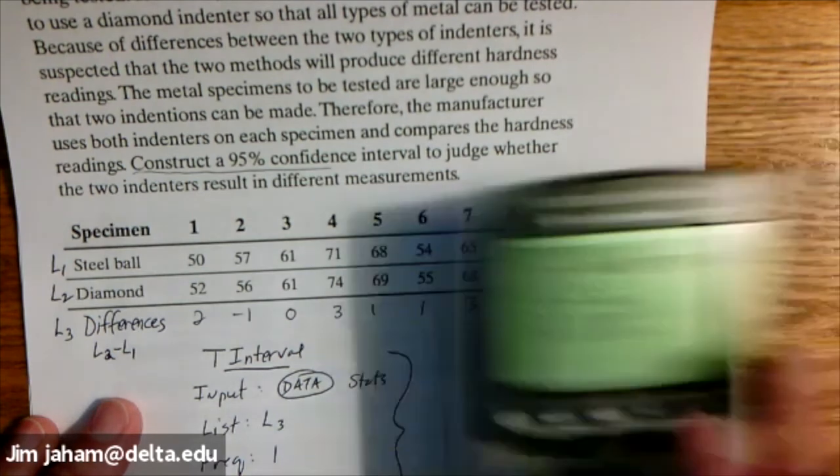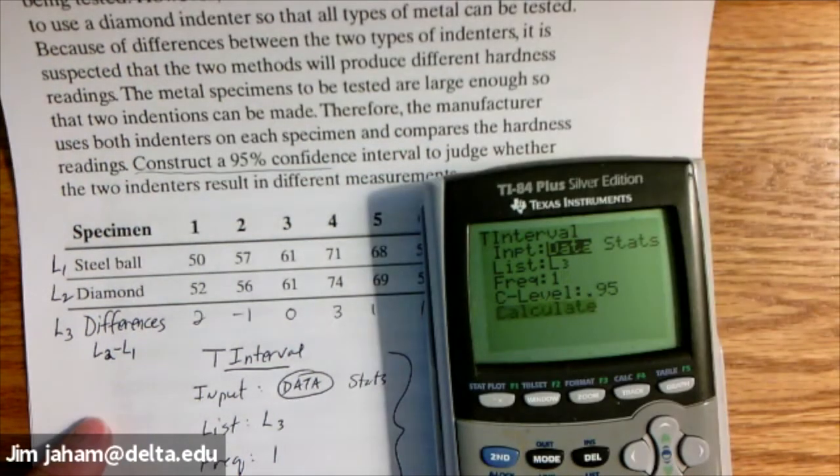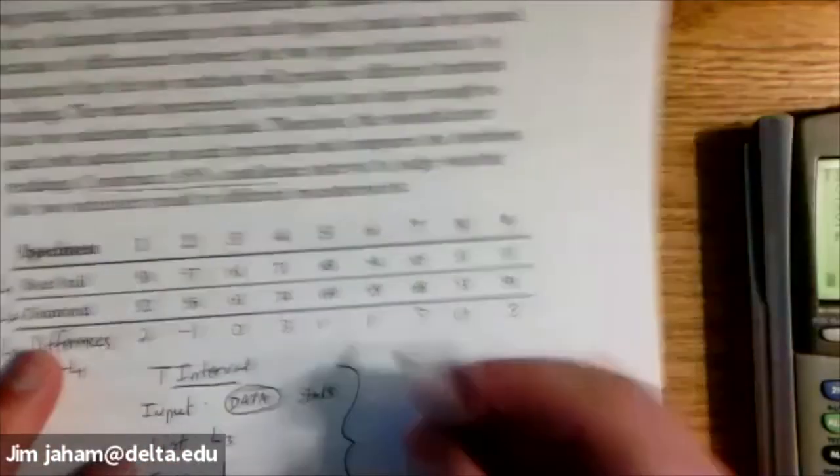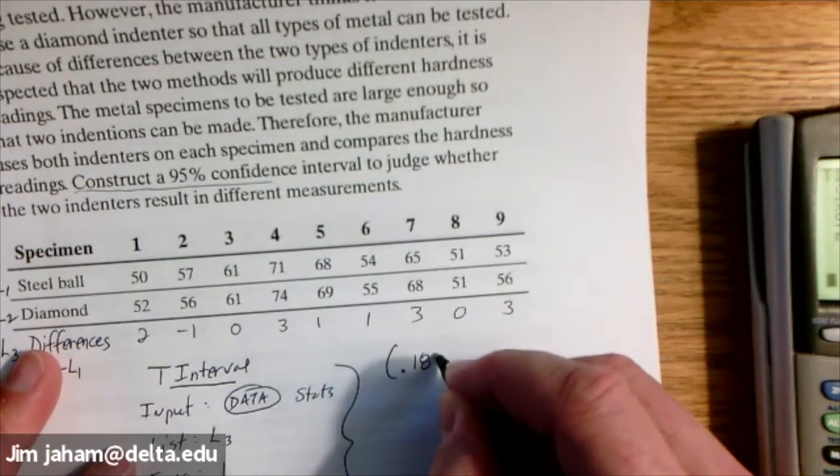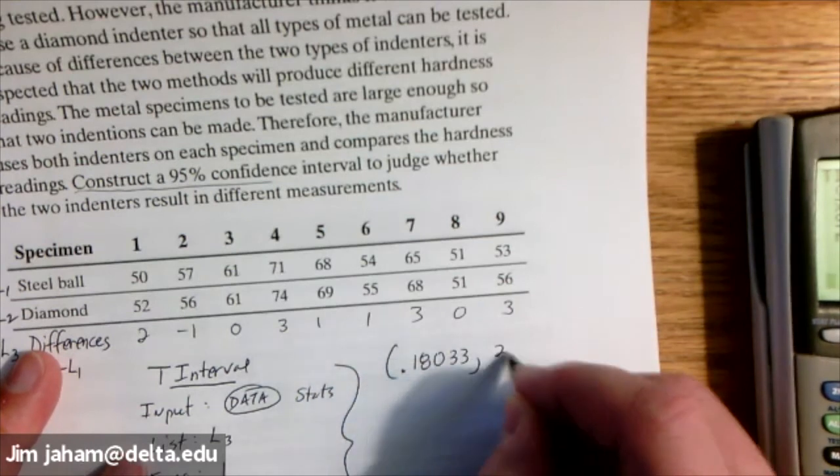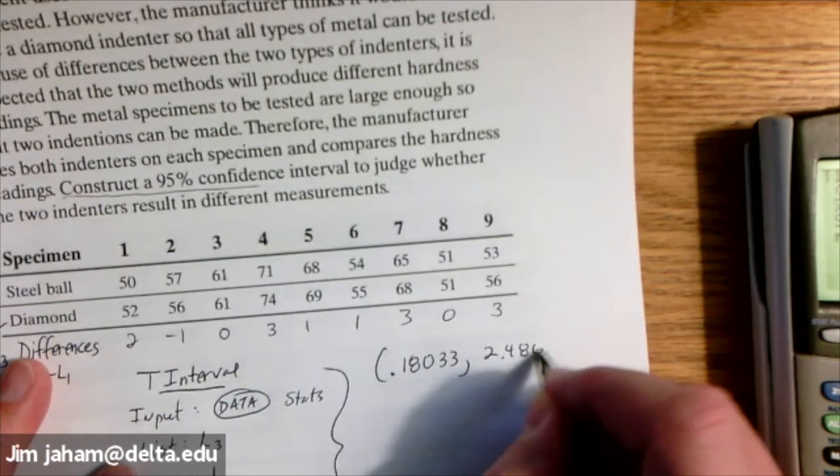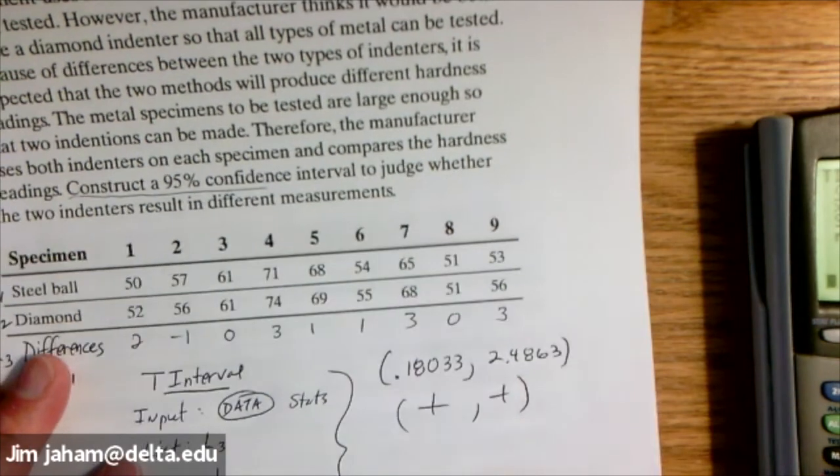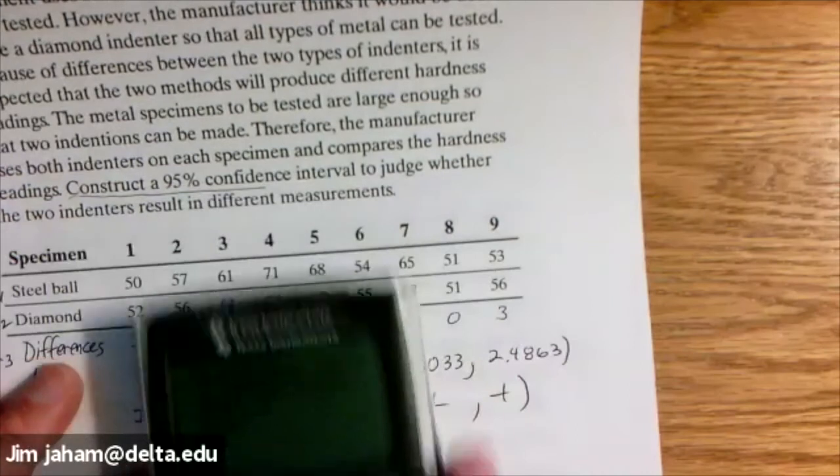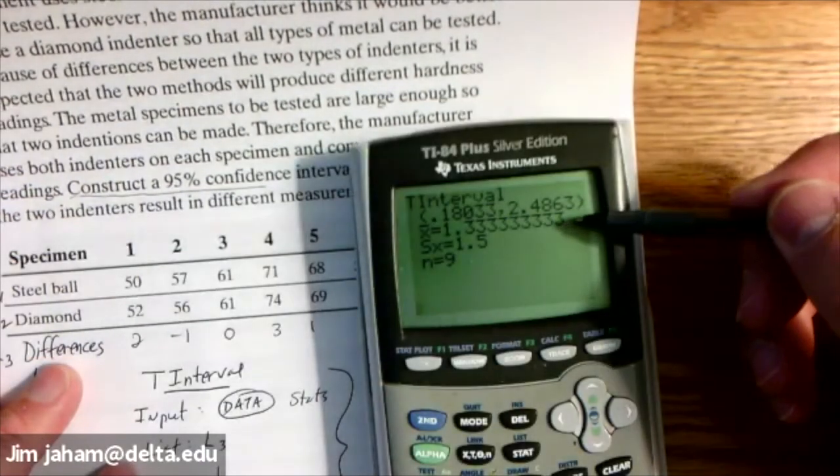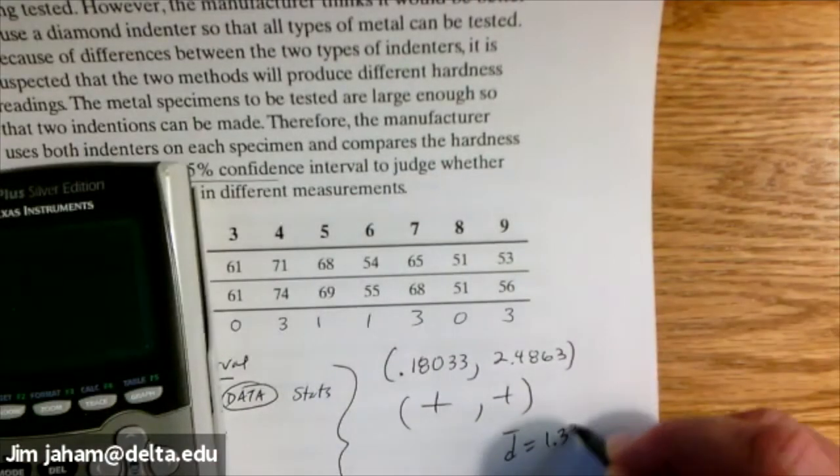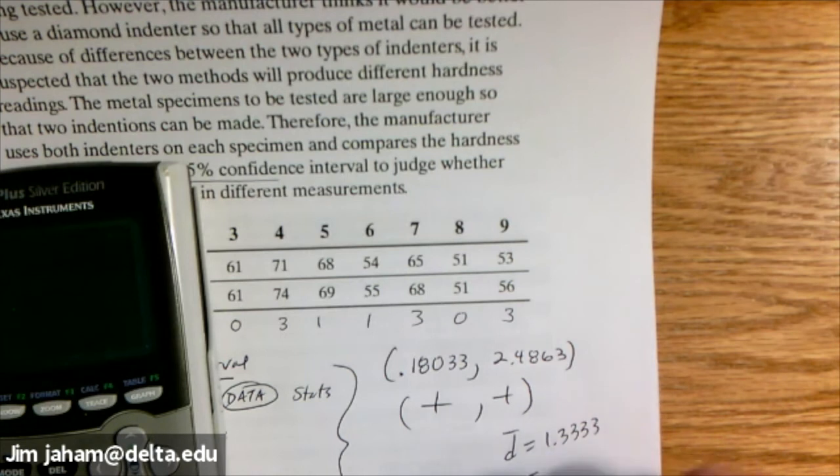So the input is going to be data instead of stats. And the list is L3. And the frequency is one. And the C level is 0.95. And with all of this, it gives us as the very first thing, our confidence interval. But what we need to know is that both of those numbers are positive. And that's how we're going to interpret the confidence interval. But it also gives us the mean of the differences, 1.333. That's D bar. And S sub D, N is 9, of course. S sub D, they gave us to be 1.5.